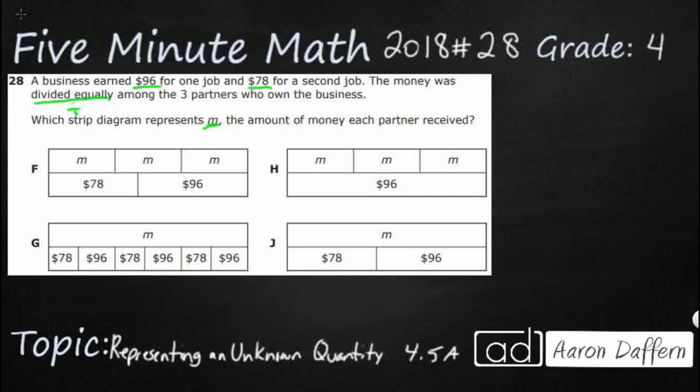Let's see if we can draw this right here. So we've got three partners, let me just draw three little stick people here, and so they are equally going to split some money, and we've got two amounts here. So we've got this $96, and then we've got $78.